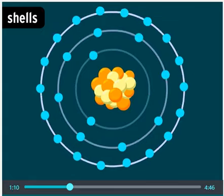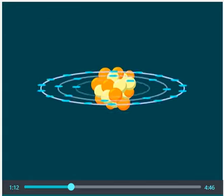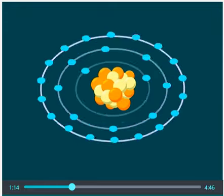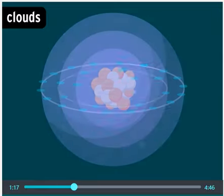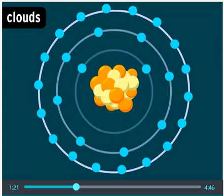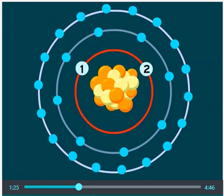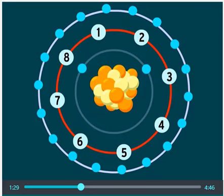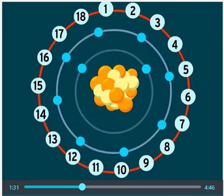Shells aren't really perfect circles. This is just a simple model. In reality, electrons orbit the nucleus in three-dimensional patterns called clouds. But the circular model helps us see that each shell can hold a certain number of electrons. The first shell, closest to the nucleus, can hold two. The second shell can hold eight electrons, while the third shell can hold up to 18, and so on.